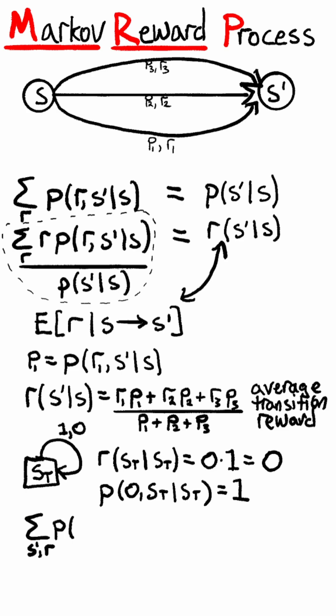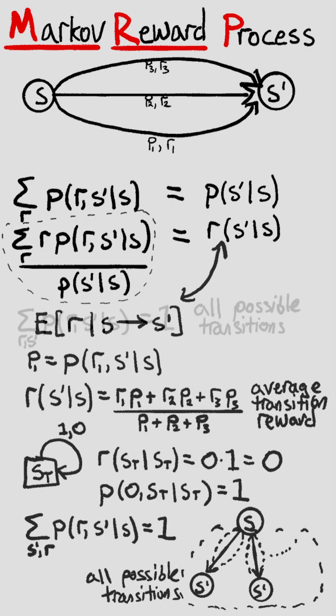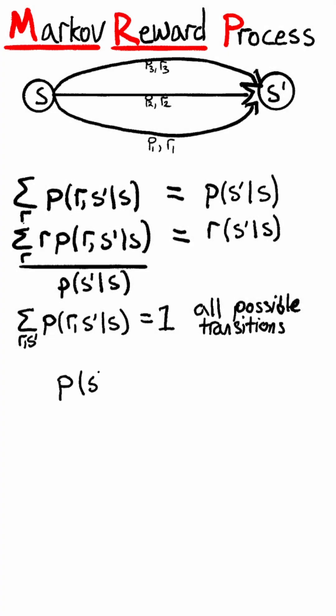Since it is a probability distribution, the sum of the transition function over all r and s prime is 1. With both the average reward and state transition function, we can calculate an exact solution for expected total reward, but we need the full transition function to do that.